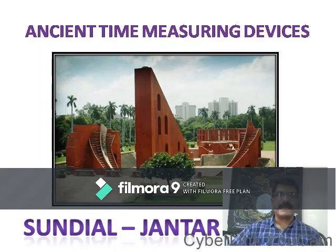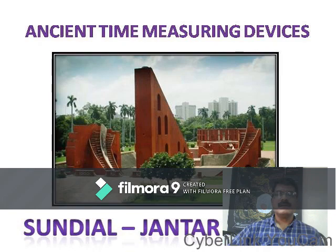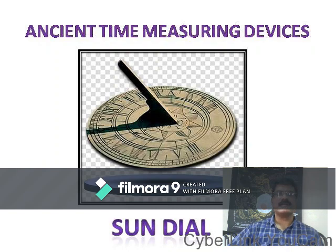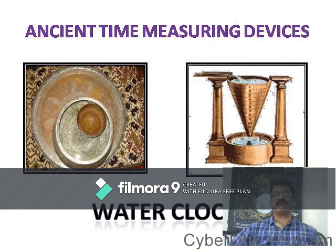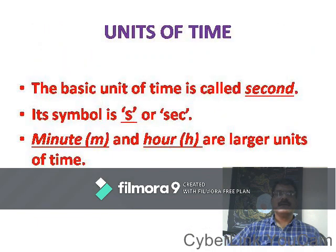In olden days or ancient times, some different devices were used. The sundial is one such device. You can see in the picture a sundial which is actually the Jantar Mantar situated in Delhi. By using the shadow, people calculated the time. Other ancient devices include water clocks and sand clocks — these are all ancient devices for measuring time.